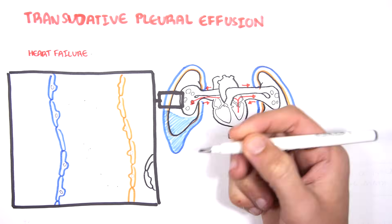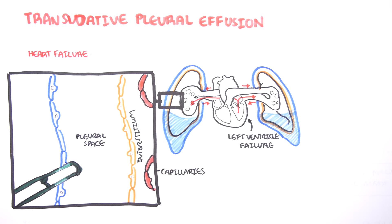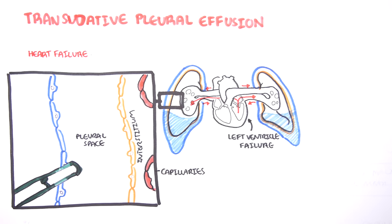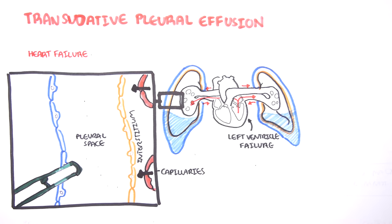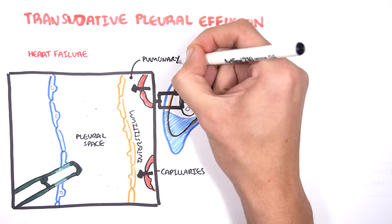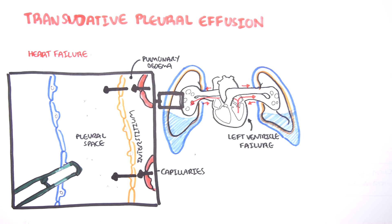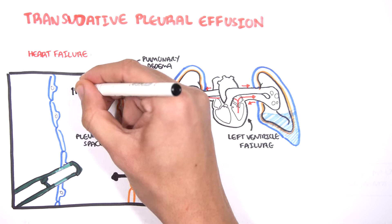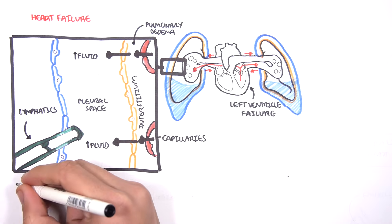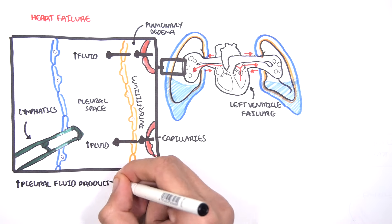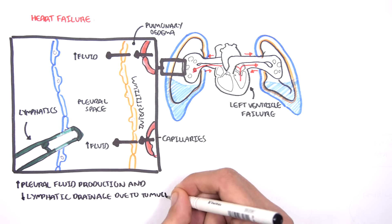Let's take a closer look at how this happens. Here are the pulmonary capillaries, the pulmonary interstitium, and the pleural space. If there is left ventricular failure, pressure builds up and blood can pool in the pulmonary capillaries. This results in fluid moving into the pulmonary interstitium, initially causing pulmonary edema. Then fluid can shift to the pleural space, causing pleural effusions. Usually the lymphatics can help maintain equilibrium, but with so much pleural fluid being produced, there is less lymphatic drainage, causing pleural effusions.